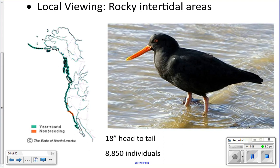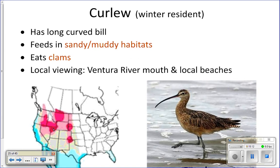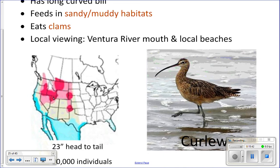Curlews are seen around here only during the winter. They have that long curved bill that gives them a very distinctive look. They eat clams and worms deep in the sand in sandy and muddy habitats, and you can see them around the Ventura River mouth or at local beaches. They are about 23 inches head to tail — almost two feet — with long legs and a long bill.